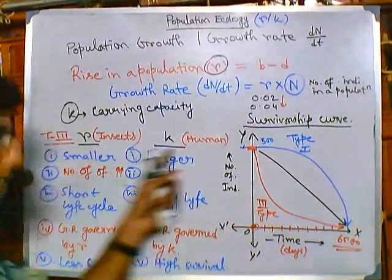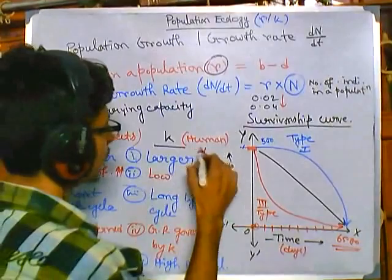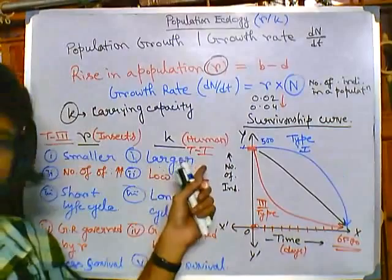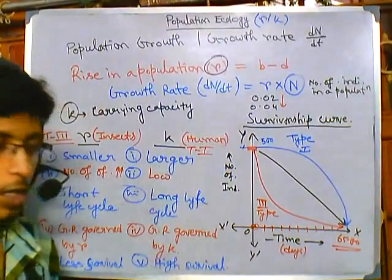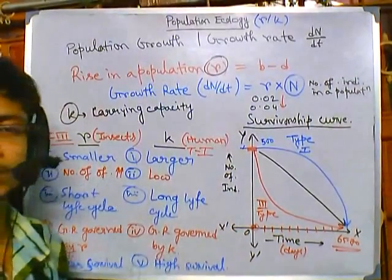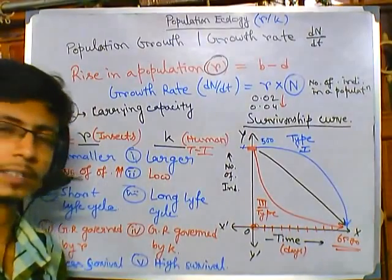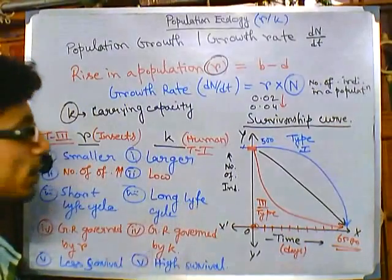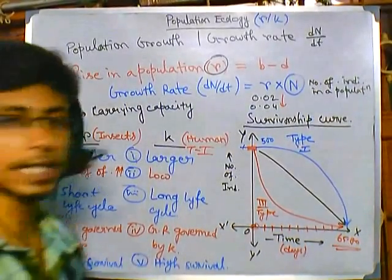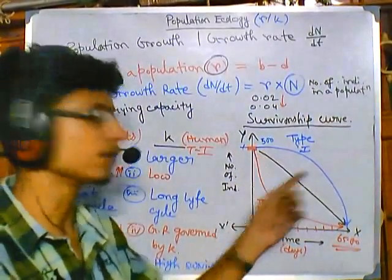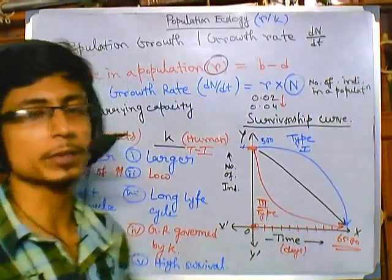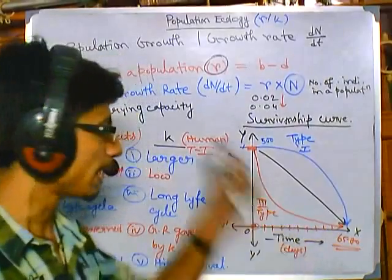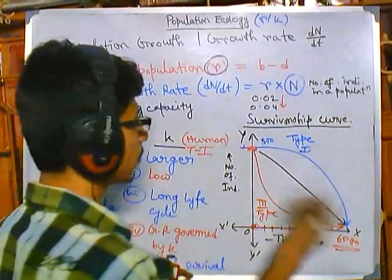To summarize: R selected species have a Type 3 survivorship curve, while K selected species have a Type 1 survivorship curve. This is an important feature and a common exam question — the difference between R and K selected species. In CSIR exams, graph-based questions may be asked on this topic. There is also a third type remaining — the black graph — which must be Type 2.